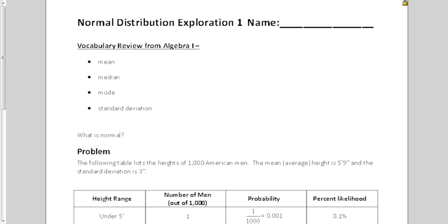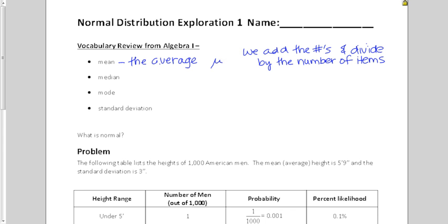The first word is mean. The word you guys usually use for mean is what you call the average. The letter for mean, we use the Greek letter mu. It's a lowercase mu. And the way we find this average is when we add numbers up and divide by the number of items. So that's a typical average to us. That's the mean.